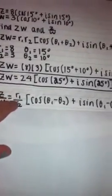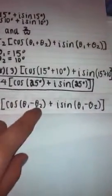Now to divide it, it's going to kind of just be doing the opposite. Z divided by W is R1 divided by R2 cos theta 1 minus theta 2 plus I sine theta 1 minus theta 2.